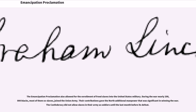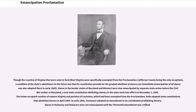The Emancipation Proclamation also allowed for the enrollment of freed slaves into the United States military. During the war nearly 200,000 blacks, most of them ex-slaves, joined the Union army. Their contributions gave the North additional manpower that was significant in winning the war. The Confederacy did not allow slaves in their army as soldiers until the last month before its defeat. Though the counties of Virginia soon to form West Virginia were specifically exempted from the proclamation, a condition of the state's admittance to the Union was that its constitution provide for the gradual abolition of slavery, and an immediate emancipation of all slaves was also adopted there in early 1865.